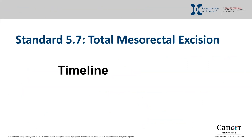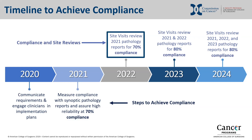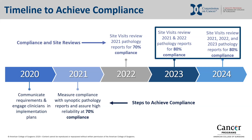Here we will address the timeline to compliance with standard 5.7. As of January 2021, centers should be measuring their own compliance using CAP synoptic reporting to achieve the required 70% compliance with this standard. Site reviews will begin in 2022 and will assess pathology reports from 2021. Goal compliance for the initial site review is 70%. In 2023 and then 2024, reviewers will assess for 80% compliance with this standard.